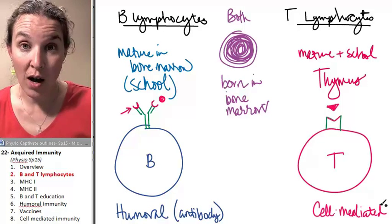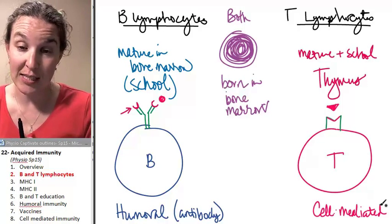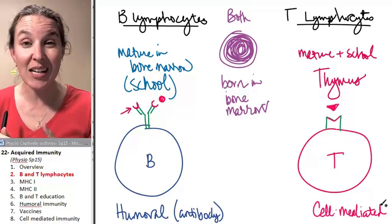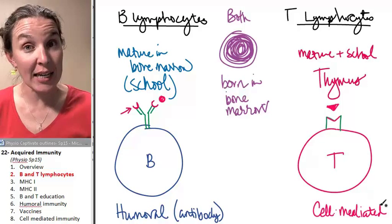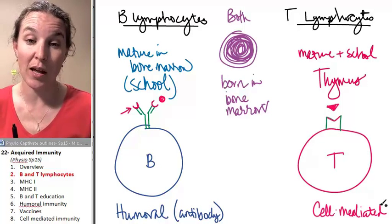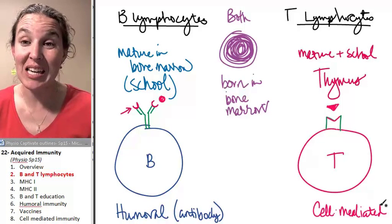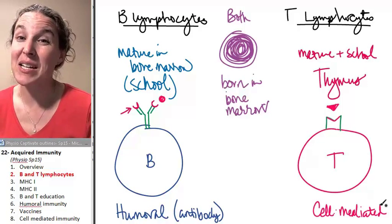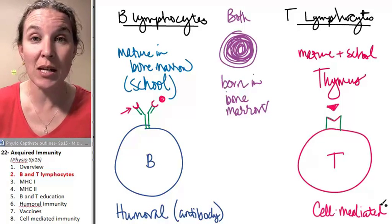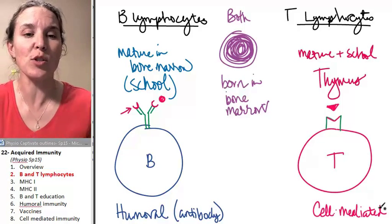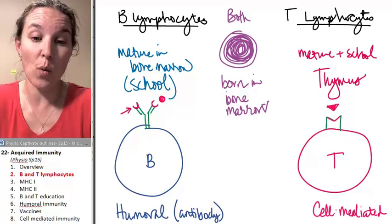Before we go on, we need to spend a little bit more time talking about the T lymphocytes. The T lymphocytes are ultimately checking MHC platforms, MHC-1 platforms. Both of them actually have to be activated, and not very many cells have MHC-2 platforms. So let's take a second to talk about MHC.